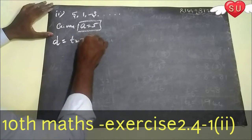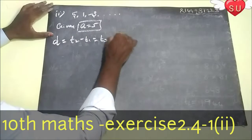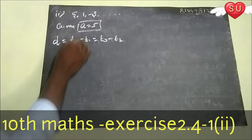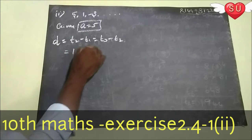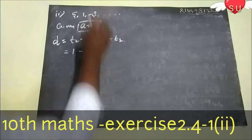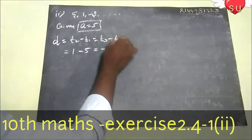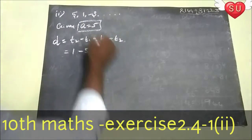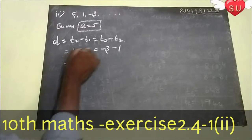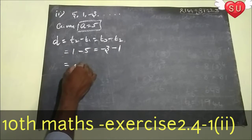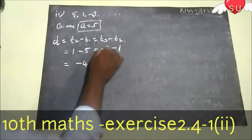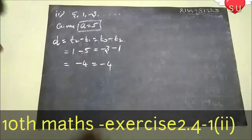T2 minus T1 is equal to T3 minus T2. So, T2 is equal to 1 minus 5, which is equal to T3 value minus 3. Then minus 3 is equal to T2 value 1. Then 1 minus 5 is minus 4, and minus 3 minus 1 is minus 4.